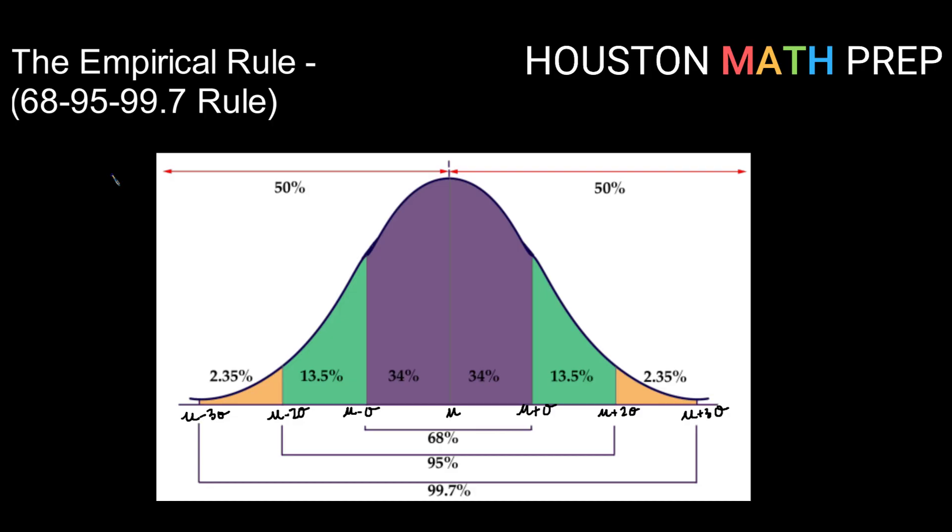then not only do we know that on either side of the mean we have 50% of the data, we also know that from one standard deviation below to one standard deviation above the mean, so mu minus sigma to mu plus sigma, we will have 68% of our data fall in that window.